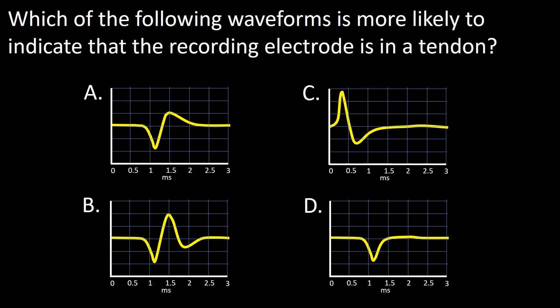EMG question of the day. Which of the following waveforms is more likely to indicate that the recording electrode is in a tendon? Please look at the four figures and choose the correct answer: A, B, C, or D.